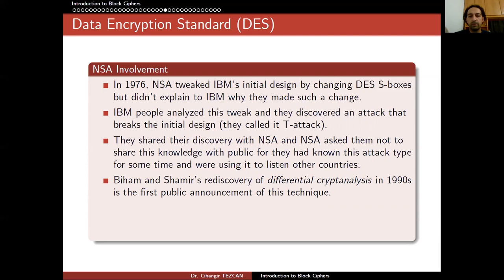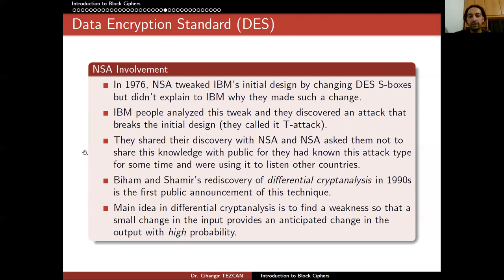Biham and Shamir's rediscovery of differential cryptanalysis in the 1990s was the first public announcement of this technique. We later learned that even the Japanese were using similar techniques during World War II, but countries kept this information to themselves. The main idea in differential cryptanalysis is to find a weakness so that a small change in the input produces an anticipated change in the output with high probability. We will discuss this in more detail in the week covering cryptanalysis.